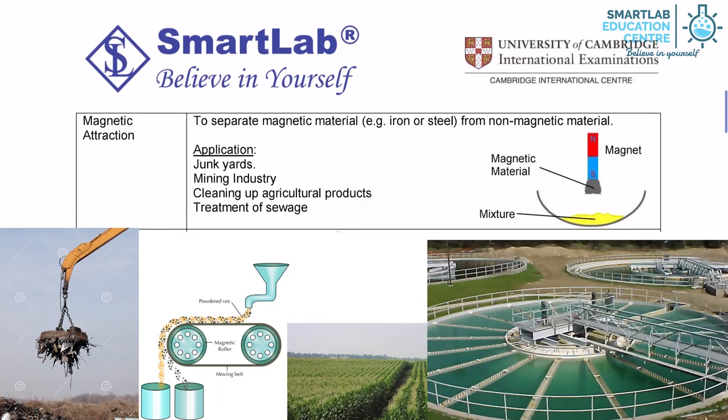In the treatment of sewage, a magnet can be used to remove suspended solids from the effluent stream. The water treated in this way is clean enough to be used for some industrial applications or to be discharged into the ocean.